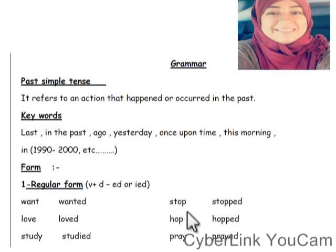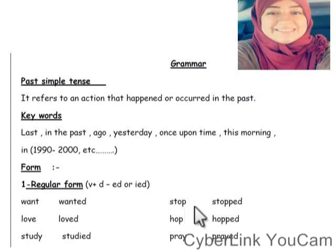If the verb ends with a vowel followed by a consonant, like stop — O is a vowel and P is a consonant — you can't just add ED directly. You must double the final consonant then add ED. So stop → stopped. Same with hop → hopped.